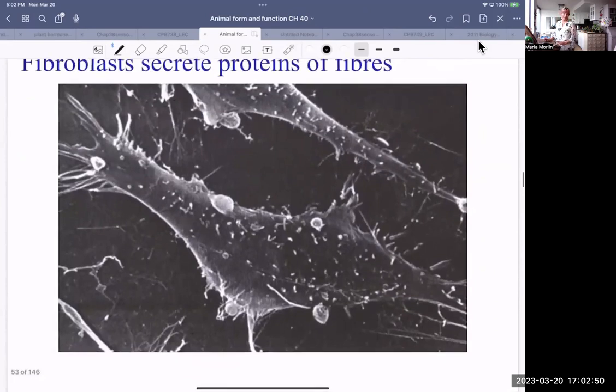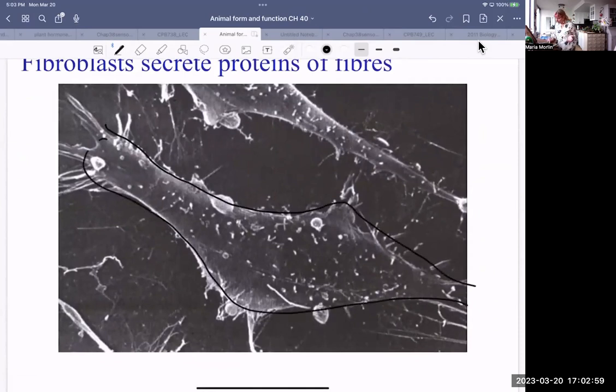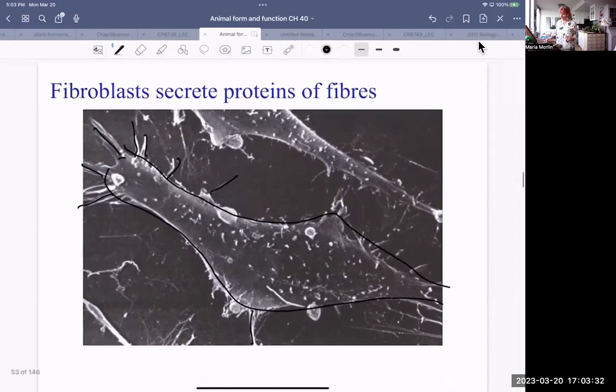These are fibroblasts. I like this picture because it shows a very highly magnified cell. This whole thing is a cell. But it also shows the pieces of collagen that are being excreted. So that's a fibroblast secreting the proteins that make up the fibers.